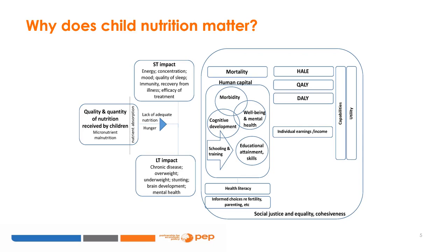Hunger and nutrition deficiency can have both an immediate and a long-term effect. The short-term impact is via energy, mood, and concentration, but also immunity, recovery from illness, and its complementary effect on the effectiveness of treatment. The long-term effect is via chronic illness, being overweight or underweight, stunting, cognitive development, and mental health. These effects have a substantial impact on morbidity, mortality, cognitive development, and more broadly, mental health and well-being.